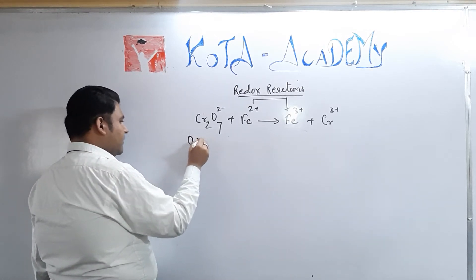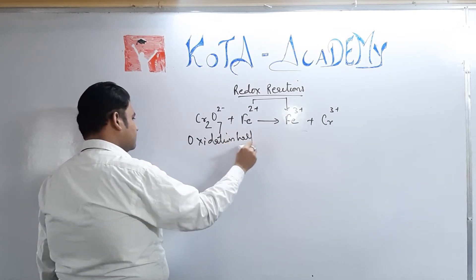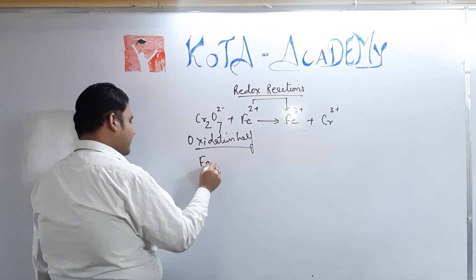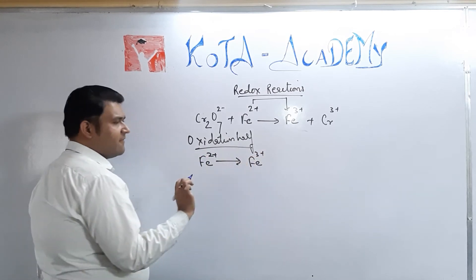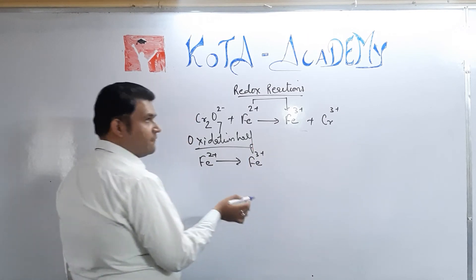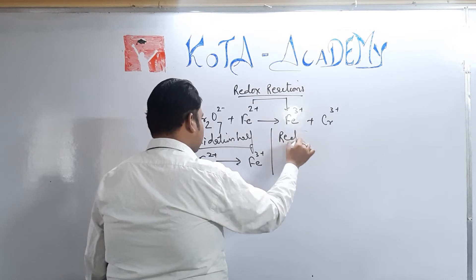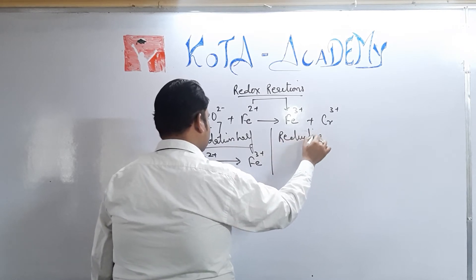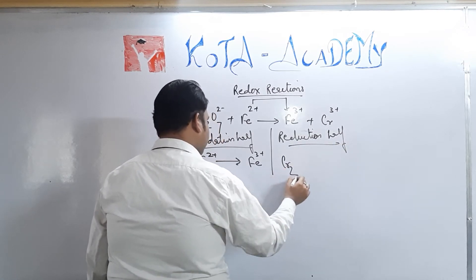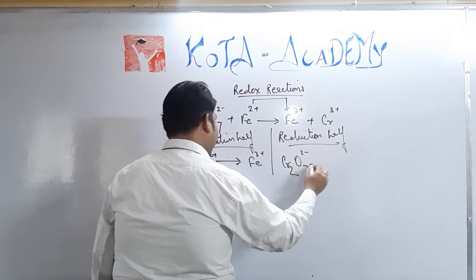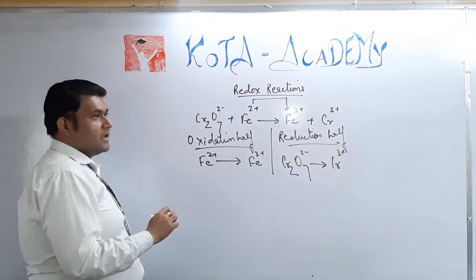So if we are writing the oxidation half, we would be writing Fe2+ gives Fe3+. As it is the half reaction, we would be indicating it in the form of half reaction. And if it is reduction half, Cr2O7 2- gives you Cr3+.